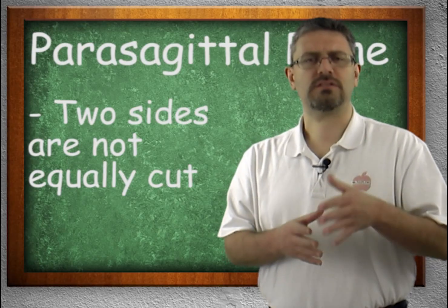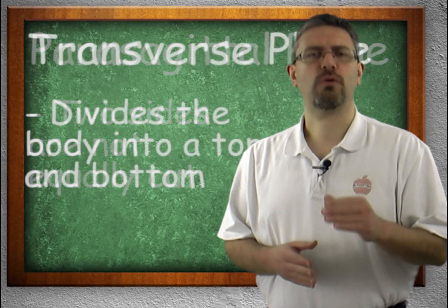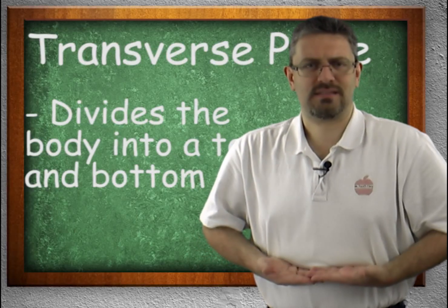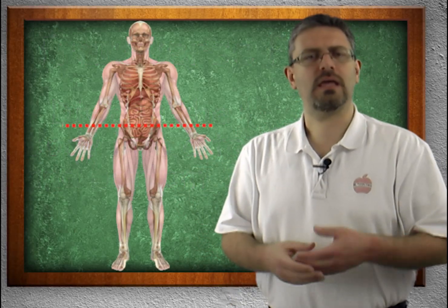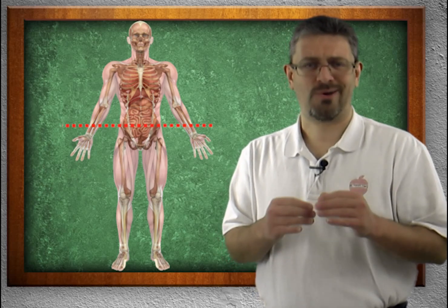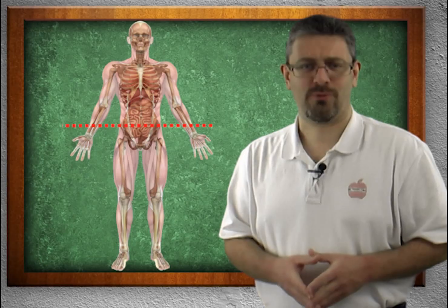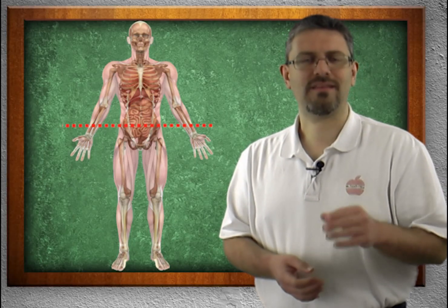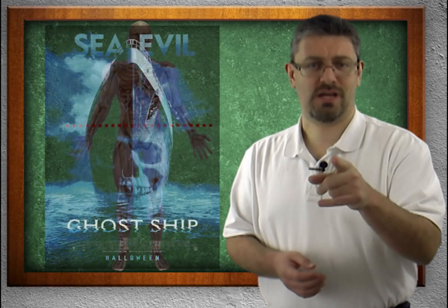Now let's talk about a top and a bottom. This is called a transverse plane. The plane comes in and you have a top and a bottom. I'm a big fan of cheesy, scary horror movies. If you want a great example of a transverse plane, rent the movie Ghost Ship.